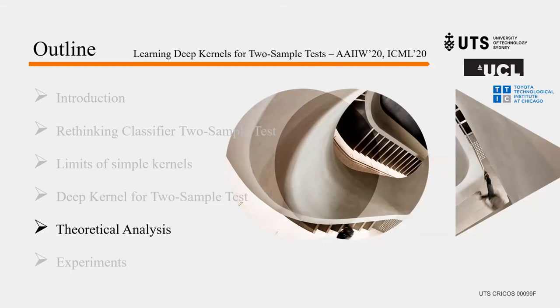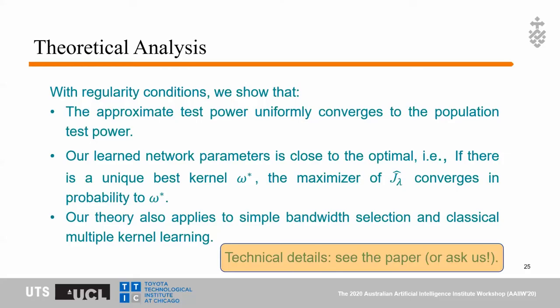With regularity conditions, we have shown three theoretical results. First, the approximate test power uniformly converges to the population test power. Second, the learned network parameters are close to the optimal ones — if there is a unique best kernel omega-star, the maximizer of J_lambda_hat converges in probability to omega-star. Third, our theory also applies to simple bandwidth selection algorithms and classical multi-kernel learning. For more technical details, please see our paper.